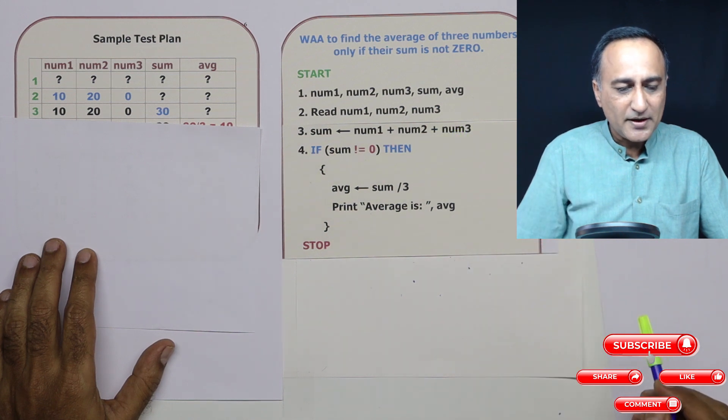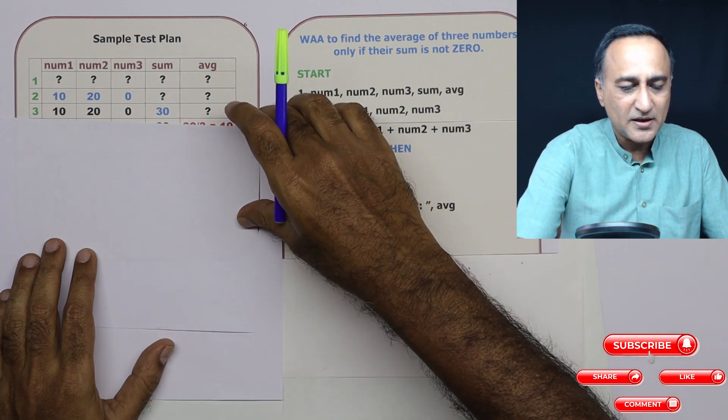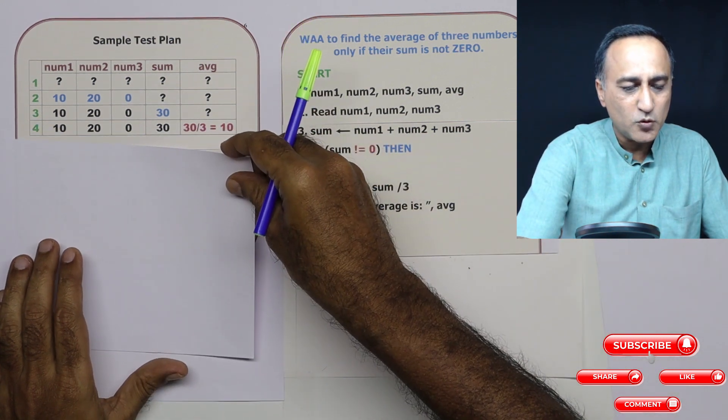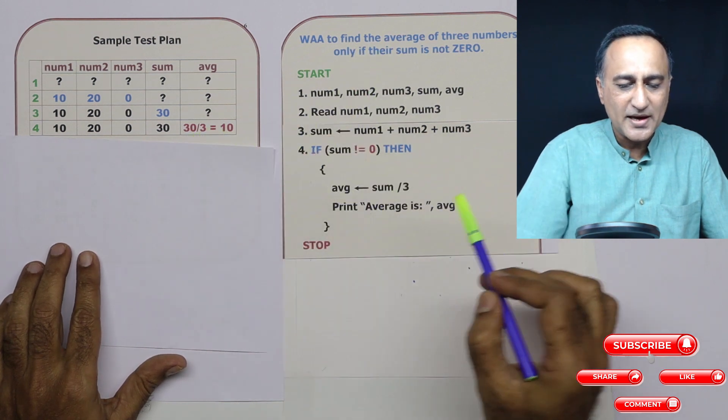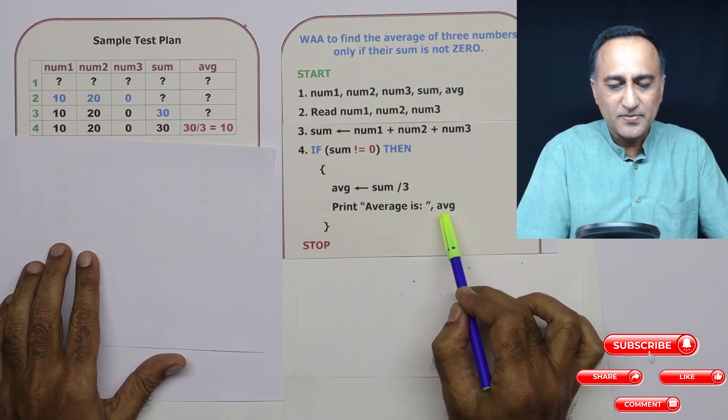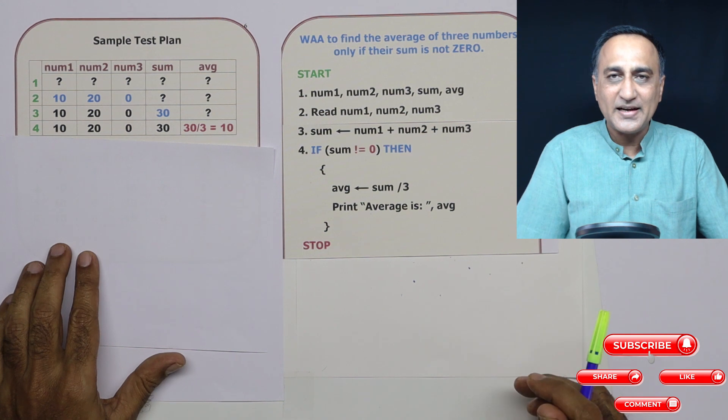Now, if you look at 20 plus 10 plus zero, it is 30. 30 is definitely not equal to zero. So what I'm going to do is I'm going to say average is 30 upon three, and average is going to print out as 10.